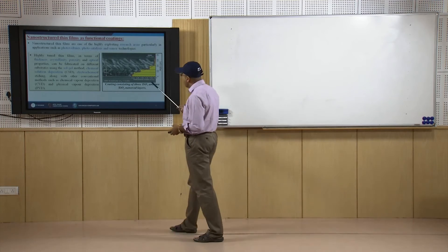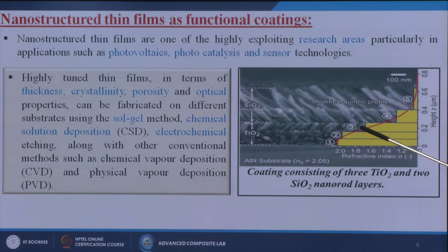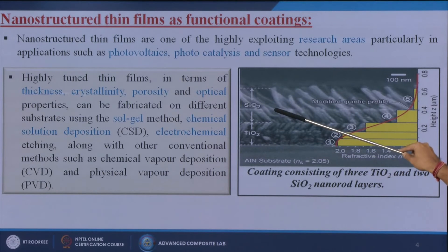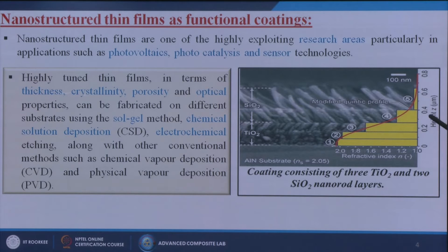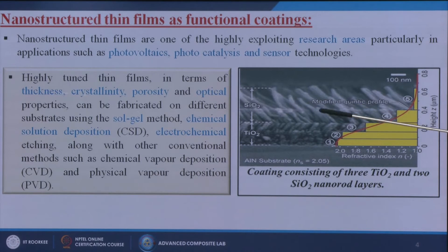Here is an example where we take a substrate of AlN on which we apply layer-by-layer coatings of different materials — titanium dioxide and silicon dioxide. You can see the size of each particular layer in micrometers. The coating consists of three different TiO2 and two SiO2 nanorod layers: layers one, two, and three are TiO2 with different thicknesses, and two layers of silicon dioxide.